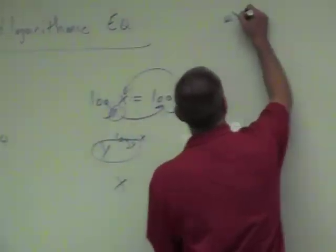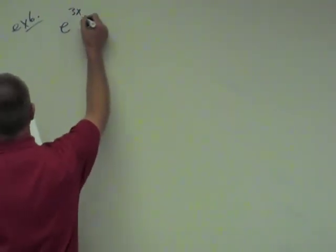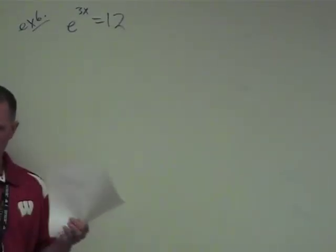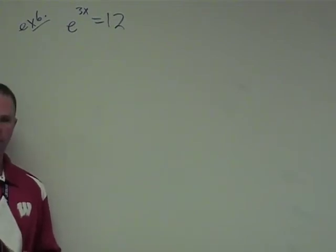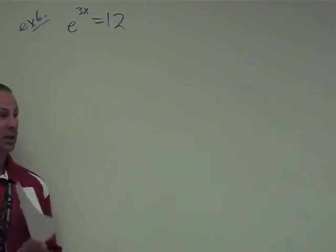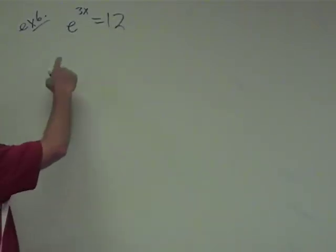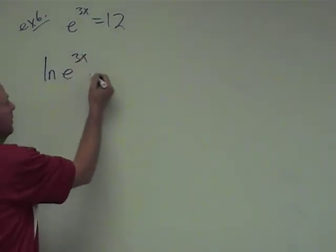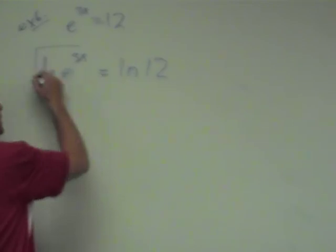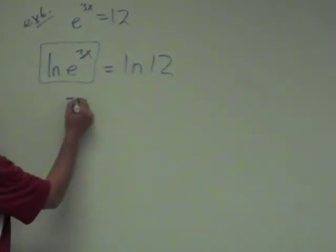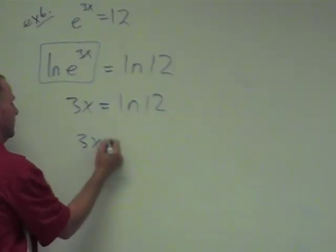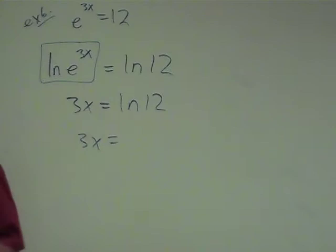Alright, let's do another example. Example 6. We have e to the 3x equals 12. My question to you is, is the exponential part all by itself? The answer is yes. e to the 3x is the exponential function part. That is all by itself. So it is all by itself. That's the whole key. When that is the case, I can take the log of both sides. But in this case, instead of the log, I'm going to take the natural log because we have e. Natural log of e to the 3x equals the natural log of 12. What is that? 3x.